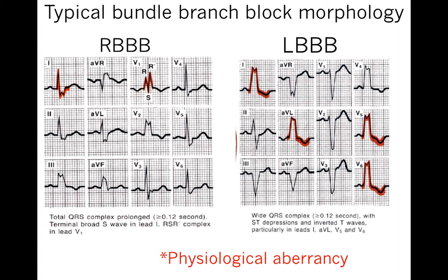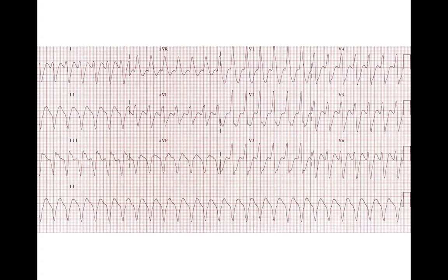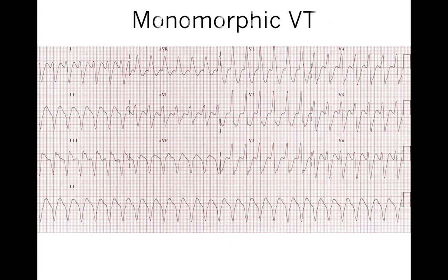If it's difficult to tell and you don't see AV dissociation, extreme axis deviation, or capture/fusion beats, try to determine whether the QRS complex looks like a typical left bundle branch block or right bundle branch block — if it does, it's likely SVT with aberrancy. Back to our initial example: it's a wide complex tachycardia with no visible P wave dissociation, but there is extreme axis deviation, and it does not look like a typical right or left bundle. Hence, this is likely monomorphic ventricular tachycardia.